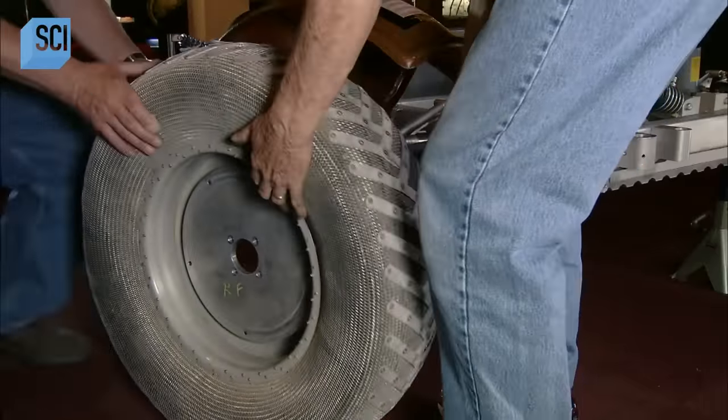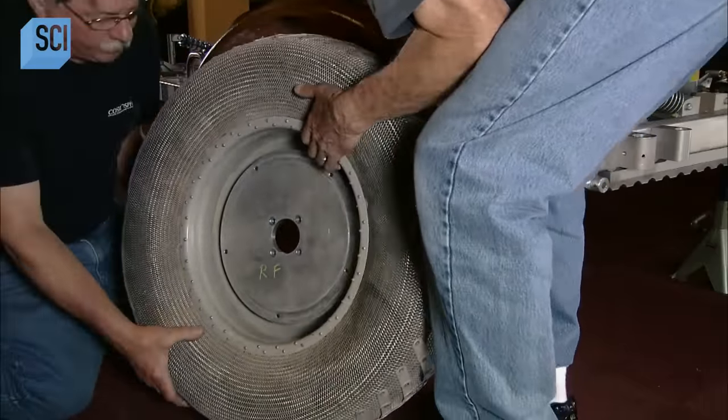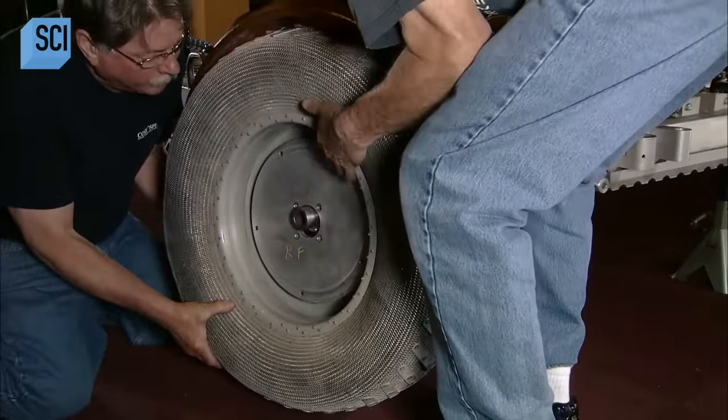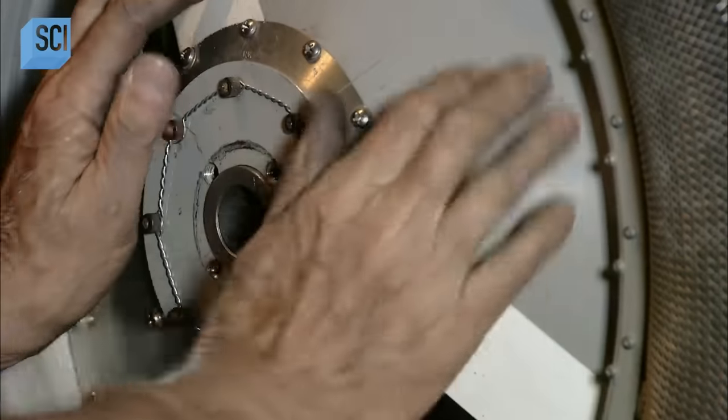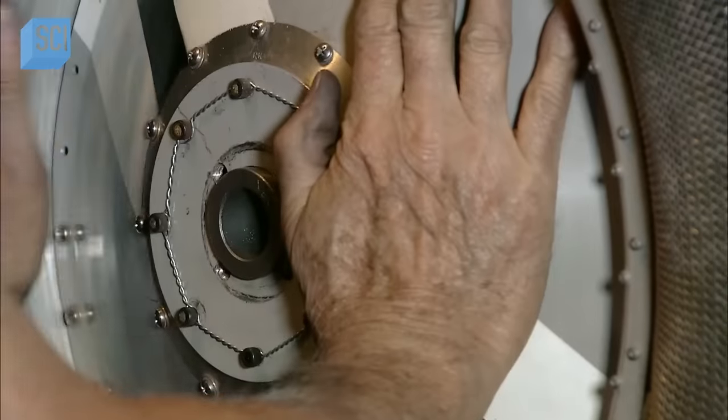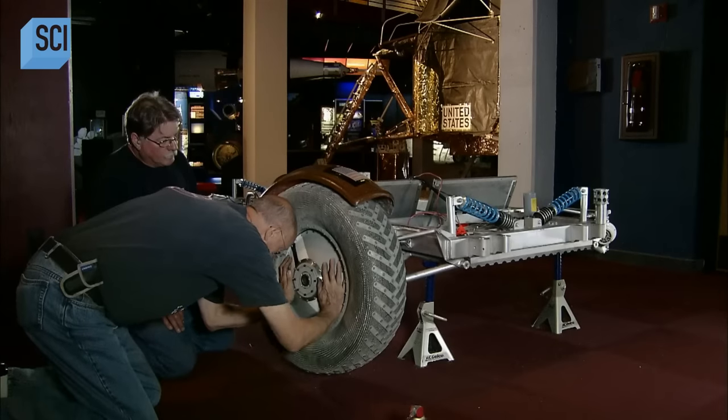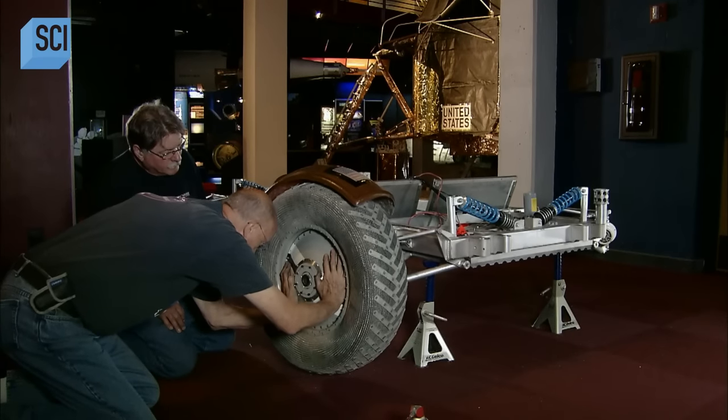They are now ready for the wheels. In the atmospheric vacuum of the Moon, air-filled rubber tires were out of the question. So the original Rover had wire mesh tires. To mimic the look, they've wrapped a wire lattice around rubber tires.